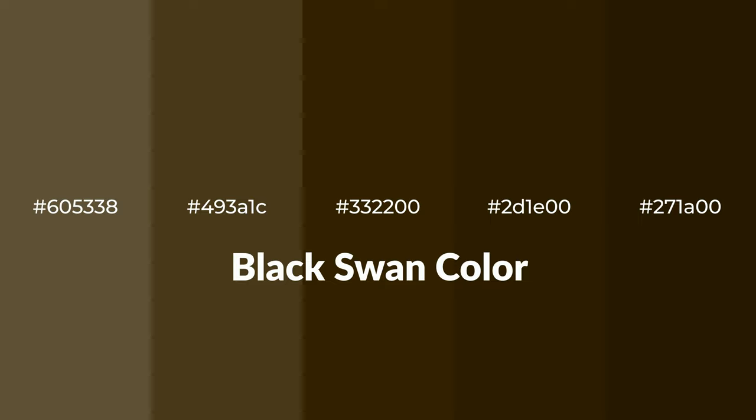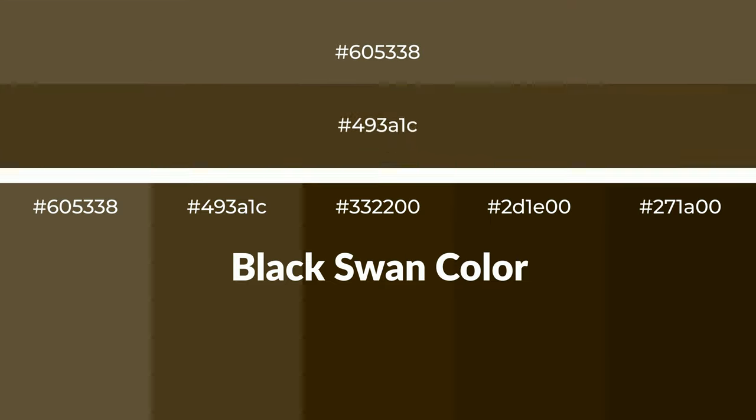Warm shades of Black Swan color with a brown hue for your next project. To generate tints of a color, we add white to the color. Tints create light and exquisite emotions. To generate shades of a color, we add black to the color, and it is used in patterns, 3D effects, and layers. Shades create depth and drama.